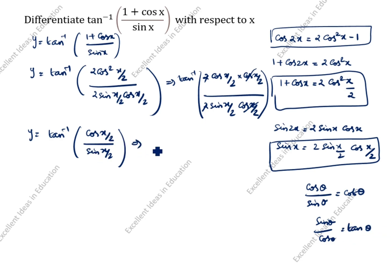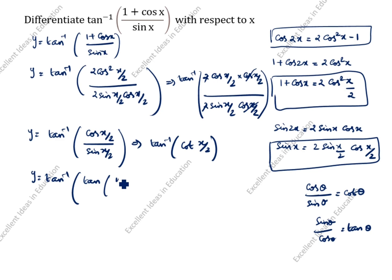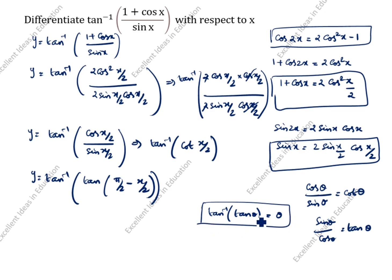So we write y equal to tan inverse of cot(x/2). Now cot(x/2) can be written as tan(π/2 minus x/2). Therefore y equals tan inverse of tan(π/2 minus x/2), and using the identity tan inverse of tan θ equals θ, the answer is π/2 minus x/2.